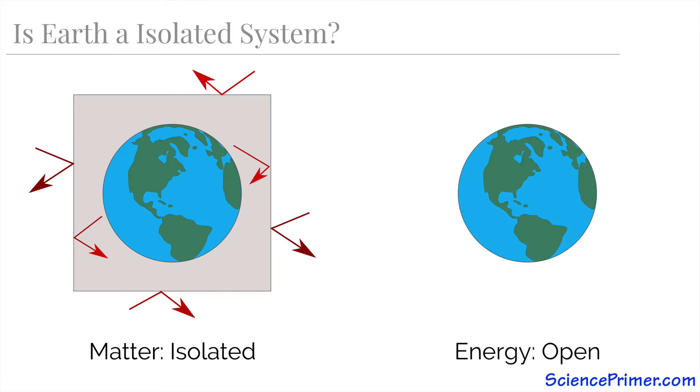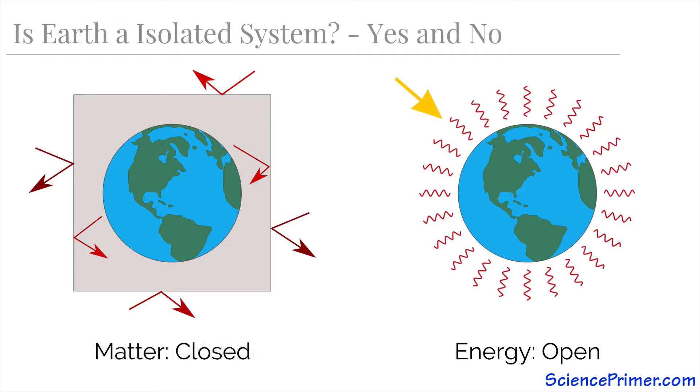The story is different for energy, for which Earth is open. Energy is constantly flowing into the Earth's system from the Sun, and most of this energy radiates rapidly back out into space in a very short time.